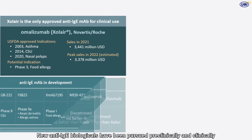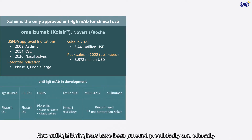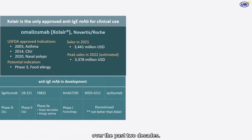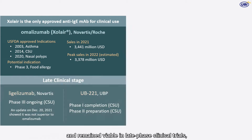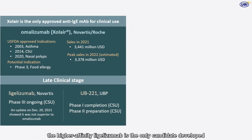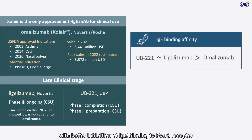New anti-IgE biologicals have been pursued pre-clinically and clinically over the past two decades. Amongst alternative IgE-targeting antibodies explored and remaining viable in late-phase clinical trials, the higher-affinity legilizumab is the only candidate developed to overcome some of omalizumab's limitations,